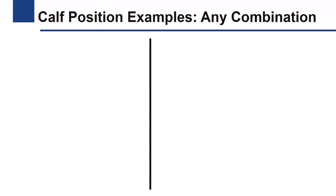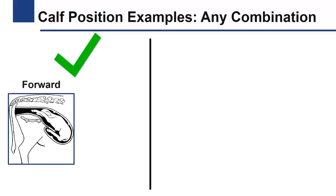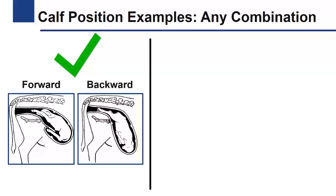As mentioned in the previous video, two calf presentations are considered normal in cattle: extended forward and extended backward presentations. Any calf presentation different than these two is considered abnormal.